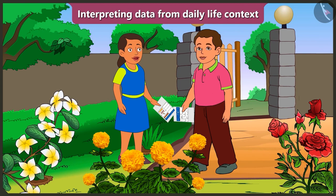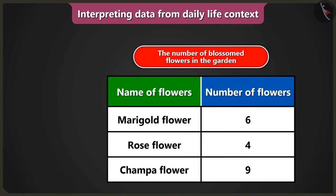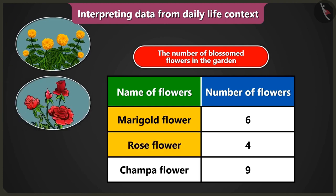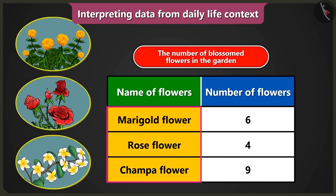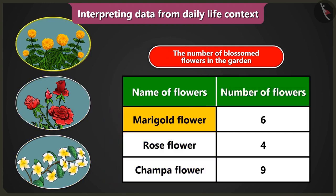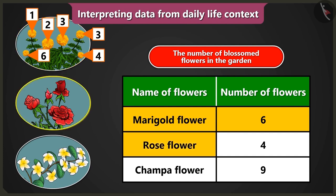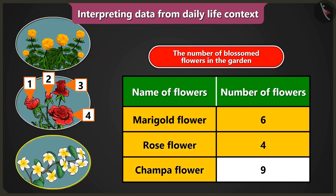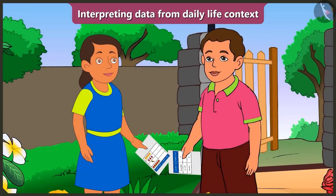After understanding the table, I have understood which and how many flowers have blossomed in the garden. I understood that there are three kinds of flowers — marigold, rose, and chumpa — that have blossomed in the garden. And there are six marigold flowers, four rose flowers, and nine chumpa flowers that have blossomed. Thank you, Bunty. You have really explained the data in the table very well.